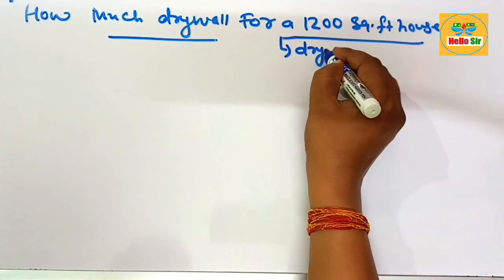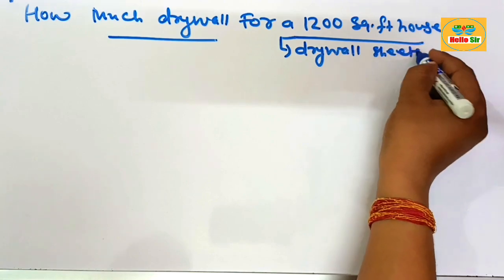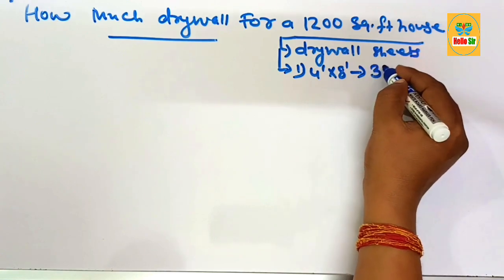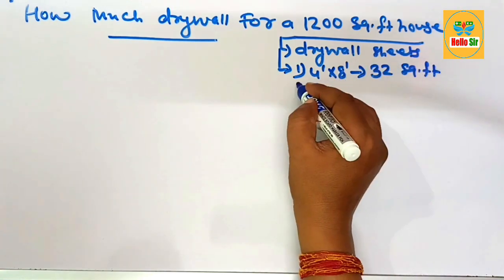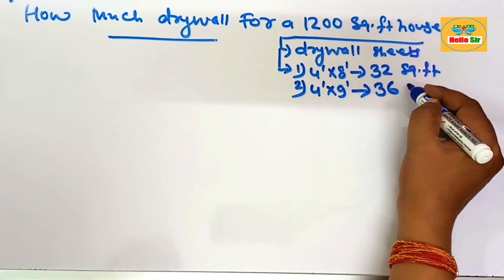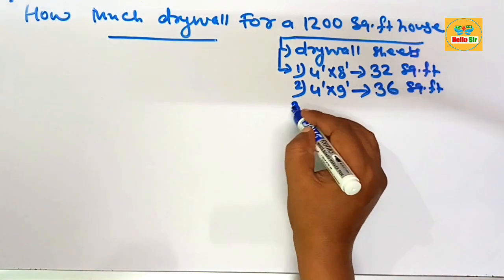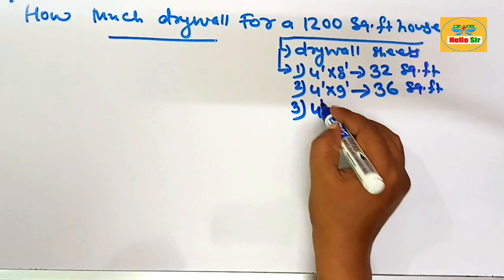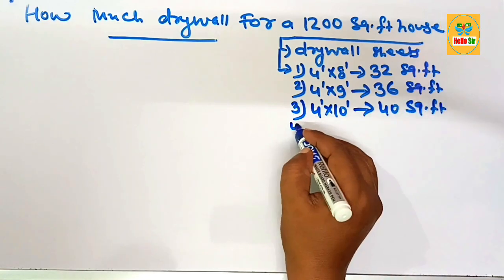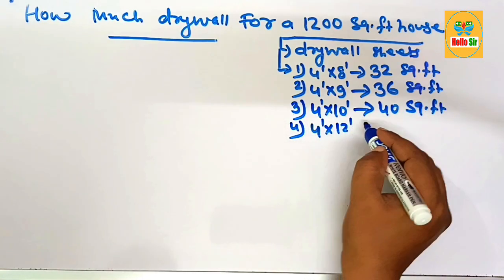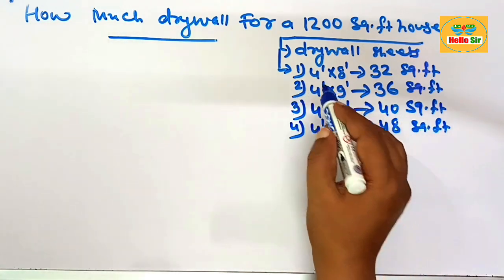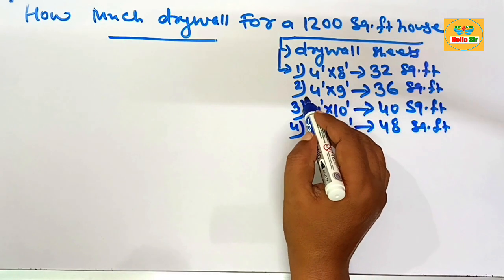The drywall sheet comes in many dimensions. You have options like 4 foot by 8 foot, which has an area of about 32 square feet. The second option is 4 foot by 9 foot, with an area of about 36 square feet. The third option is 4 by 10 foot, with an area of about 40 square feet. The fourth option is 4 foot by 12 foot, with an area of about 48 square feet.